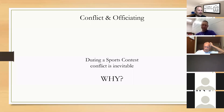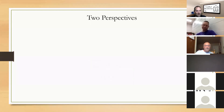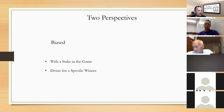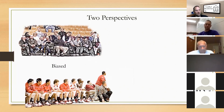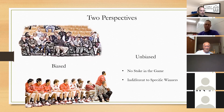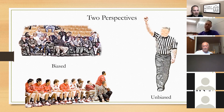So why is conflict inevitable in sports and basketball specifically? Competition — people want to win. There are two perspectives: a biased perspective from someone who has a stake in the game — they want to win, so they see things that way. Fans, coaches, and players typically have that biased opinion. The other perspective is unbiased — and officials are typically, hopefully, unbiased.